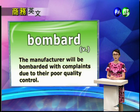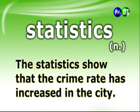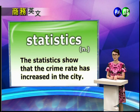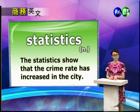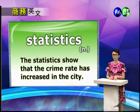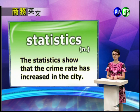那这是这句话的意思。现在我们来看下一个单字：Statistics. The statistics show that the crime rate has increased in the city. Statistics 是统计，统计学或者是统计的结果、统计的资料。这句话是说，统计的结果指出在这个城市里面，crime rate 就是犯罪率，犯罪率已经提升不少了。